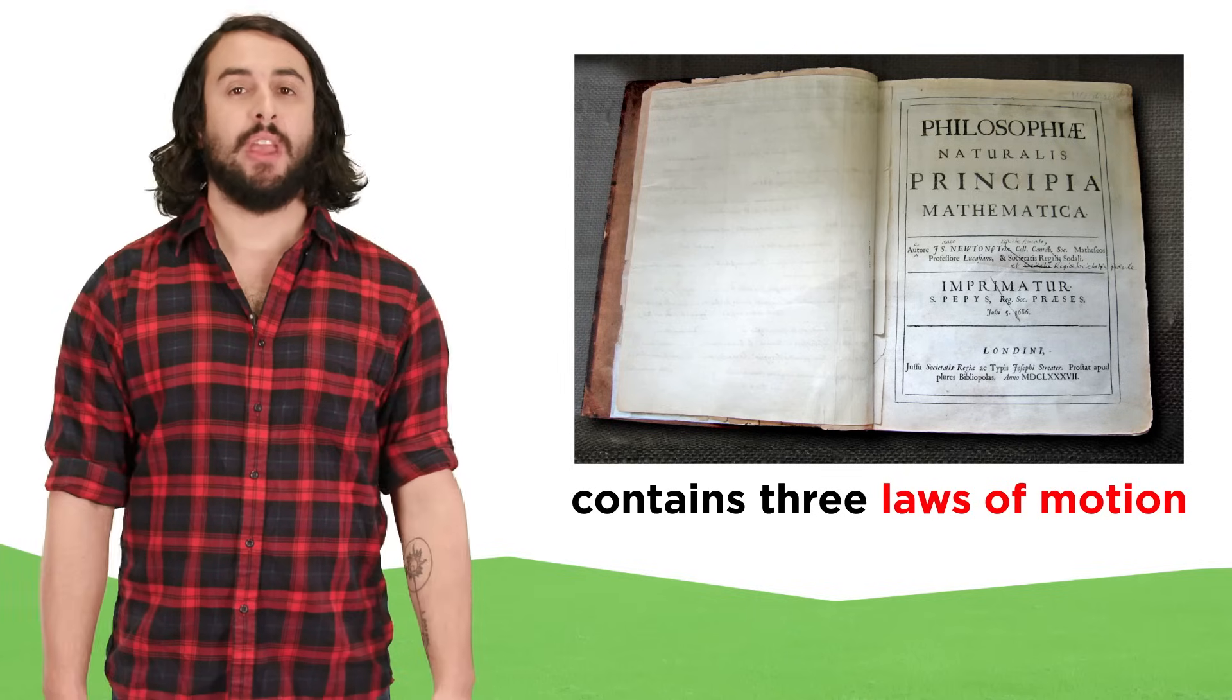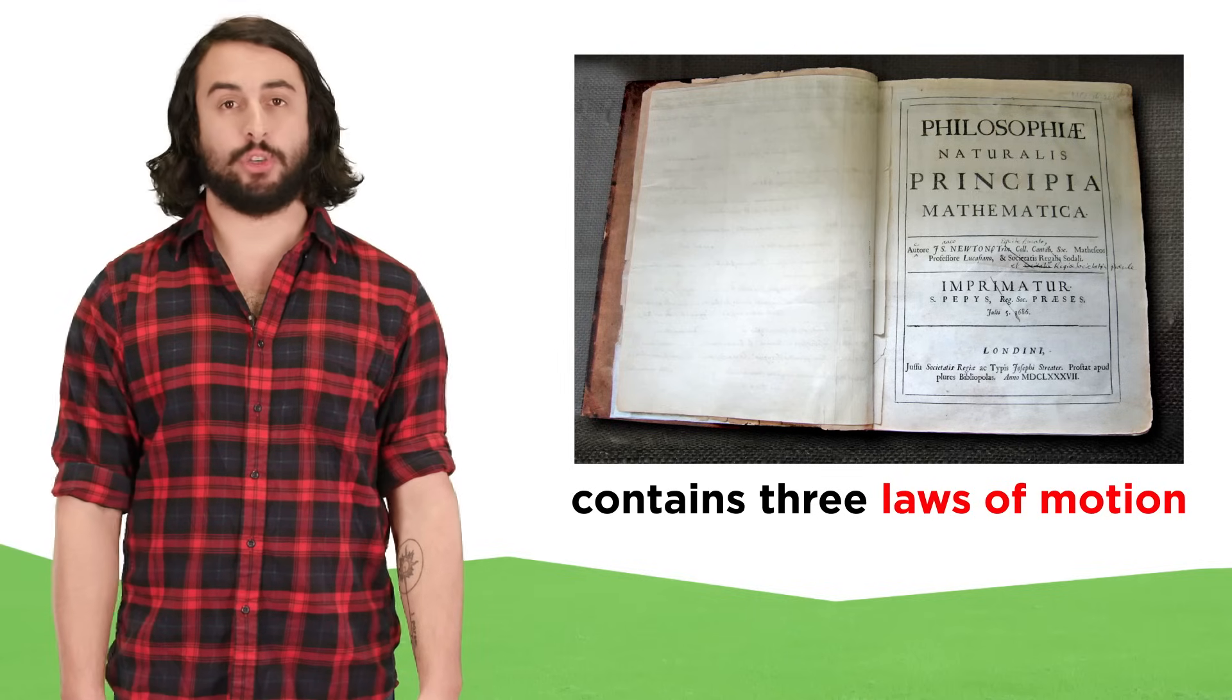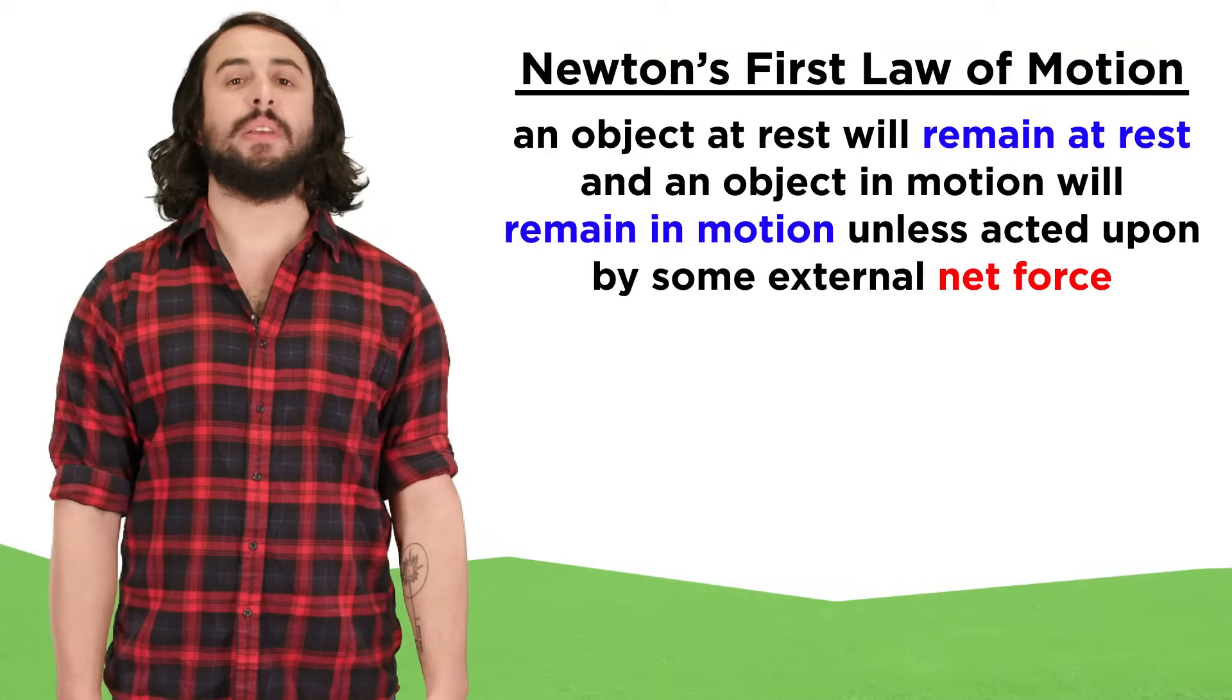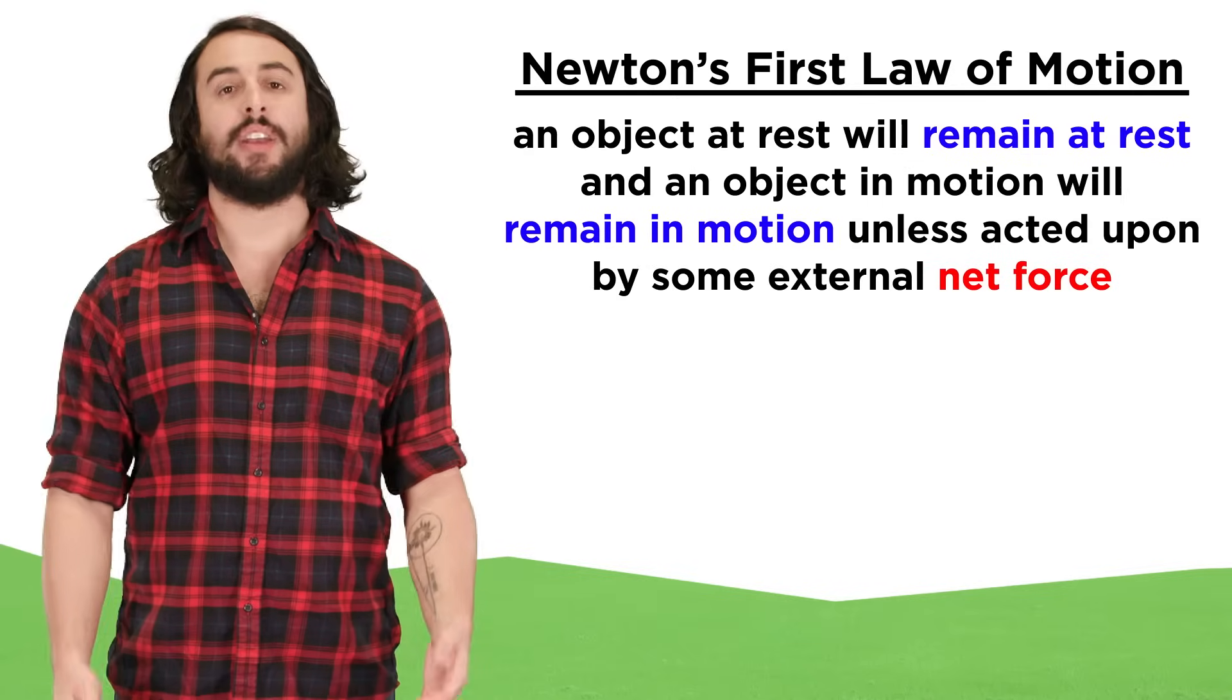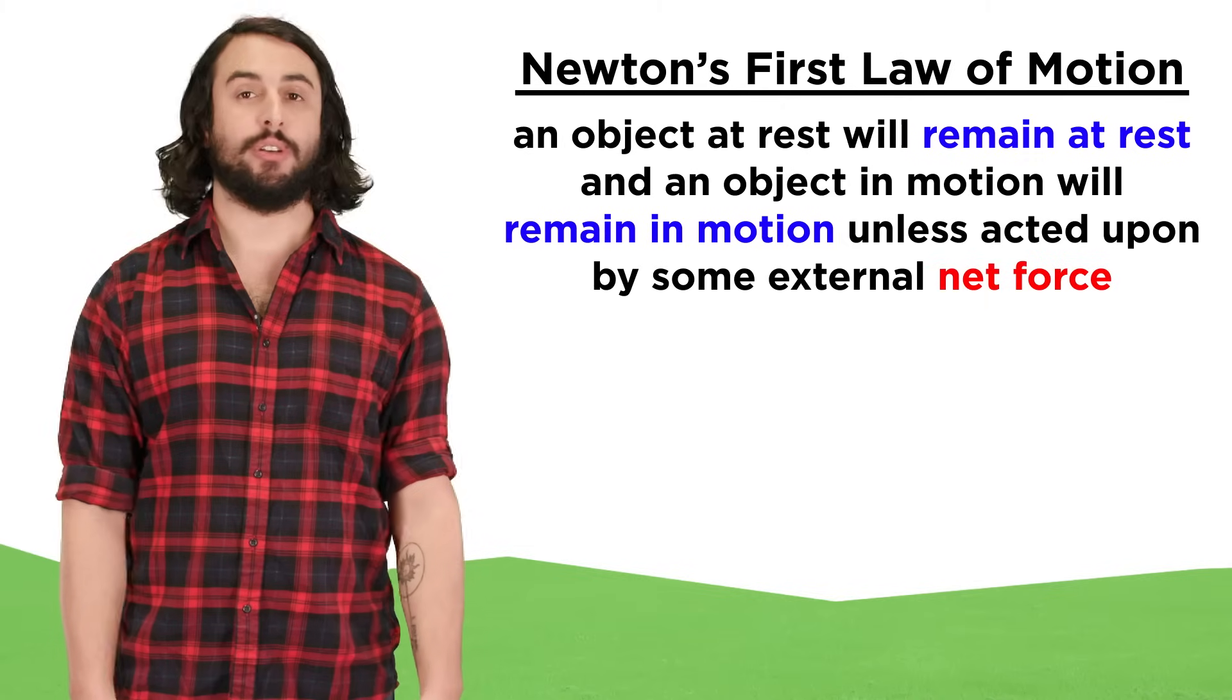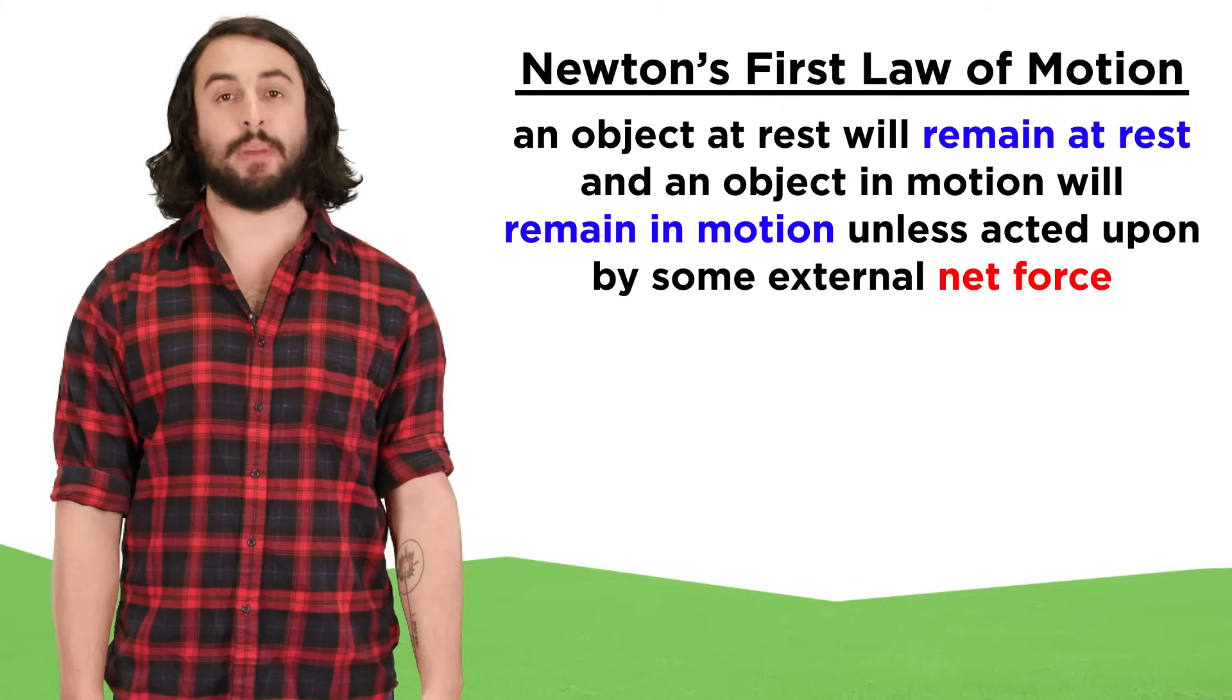In Newton's Principia, he describes three laws of motion and the first of these three was revolutionary. It can be summarized as follows: an object at rest will remain at rest and an object in motion will remain in motion unless acted upon by some external force.